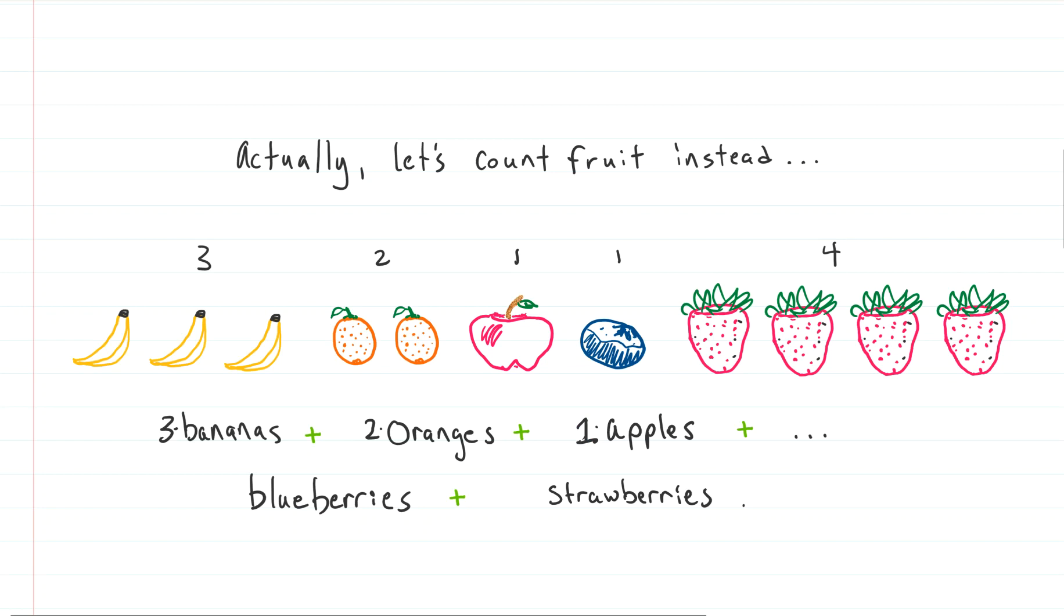So we had one blueberry, so we're going to put one here. I mean, one banana, not blueberry. We have three bananas. We've got two oranges. So you'd write two oranges here. And we've got one apple. So I'm going to put one right here.